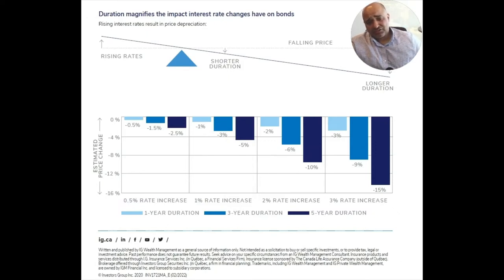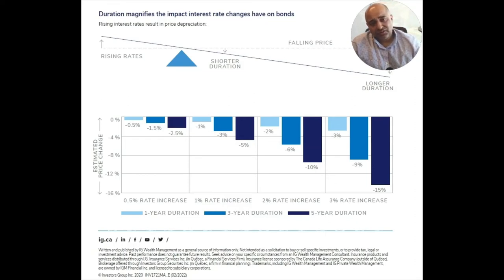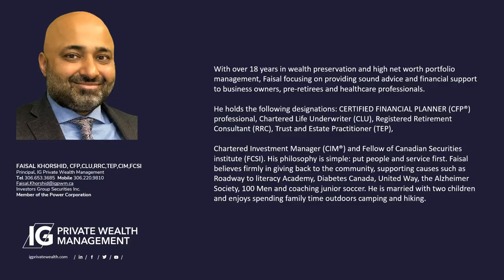In this illustration, if the interest rate increases by 1%, the 5-year duration bond portfolio will drop 5%. And looking at the extreme right, if the interest rate increases by 3%, the 5-year duration bond will drop 15%.